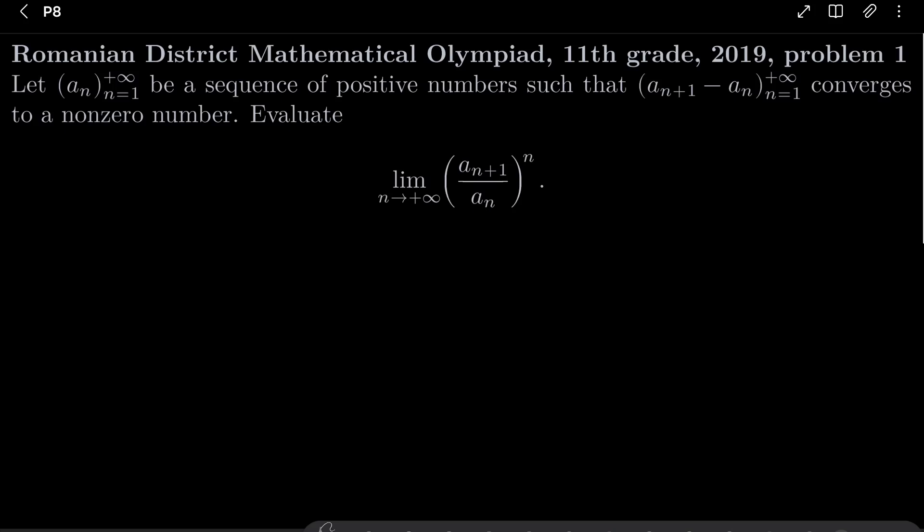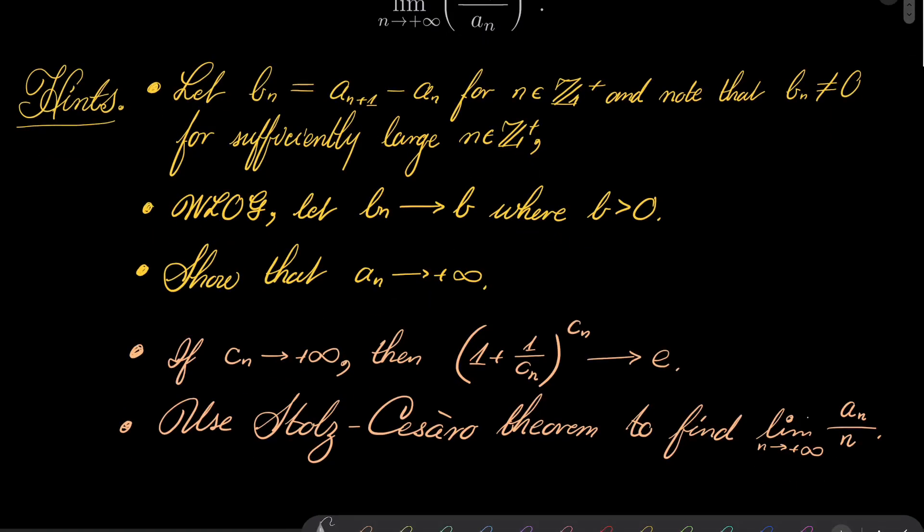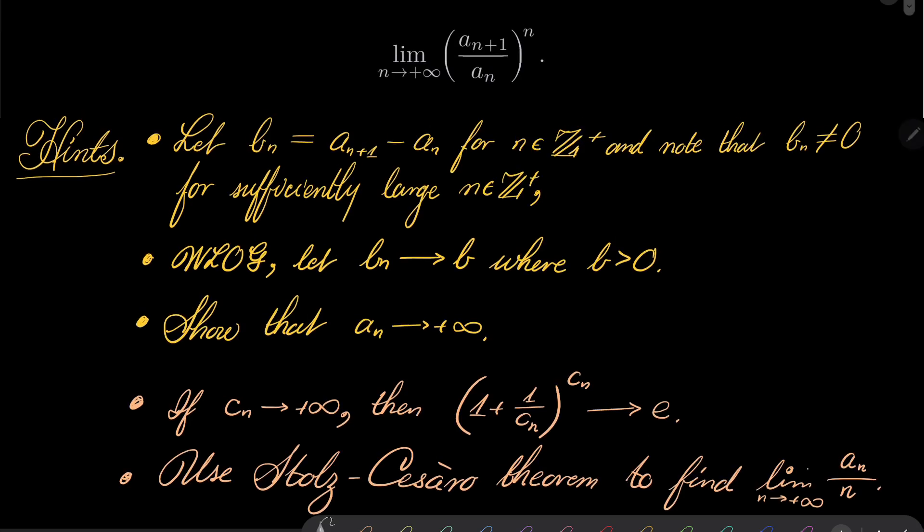So it's a nice problem from mathematical analysis, calculus. Here are my hints. First, let b_n be the difference, so it's a_{n+1} minus a_n. Note that since this converges to a non-zero number, b_n is not equal to zero for sufficiently large n. Moreover, without loss of generality, you can assume that it converges to some number b,